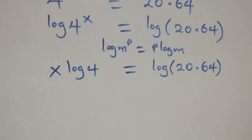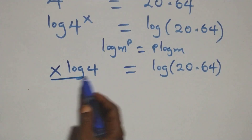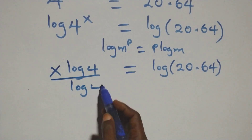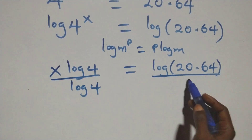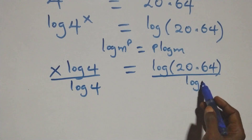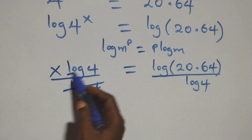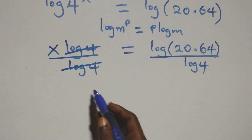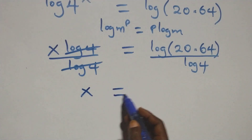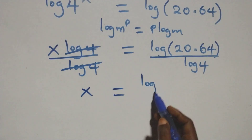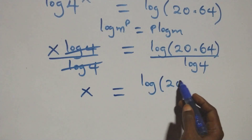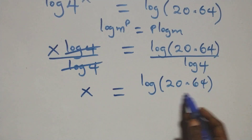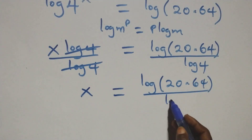The next step, we divide both sides by log 4. This implies that log 4 cancels on each side. Then we have x equals to log of 20 times 64 over log 4.